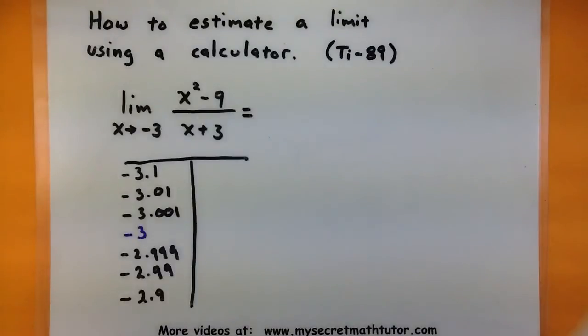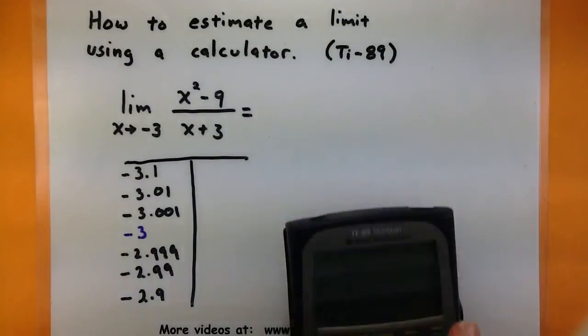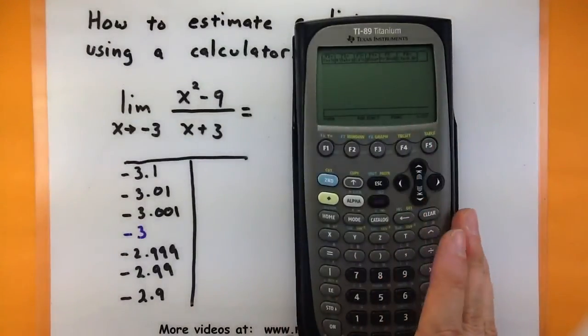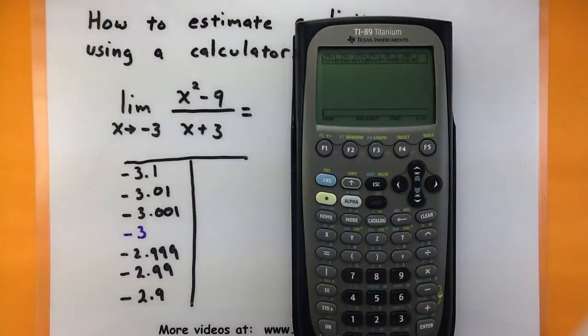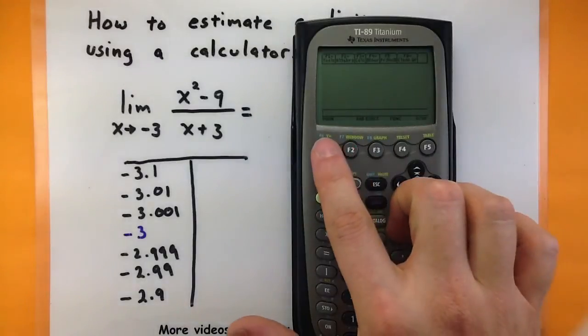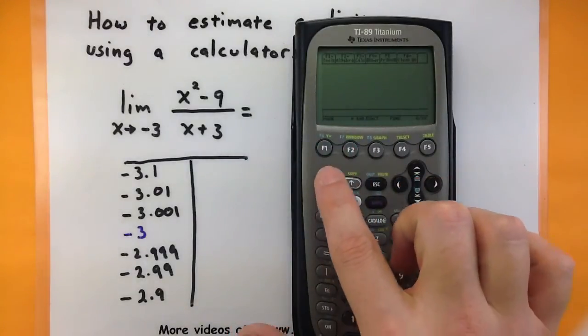All right, so let's grab our calculator and see how we can estimate our limit by basically plugging in these different values. So the first thing you want to do is actually get the function into your calculator. I'm going to go to my y equals by pressing the green button and then F1.